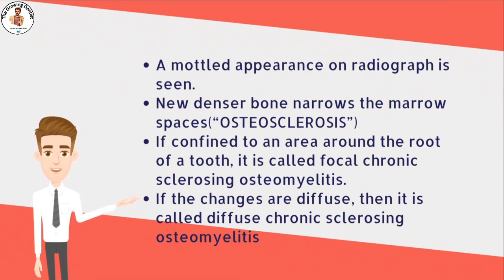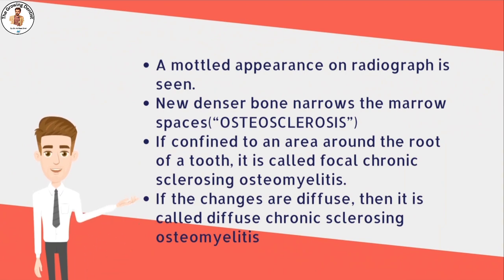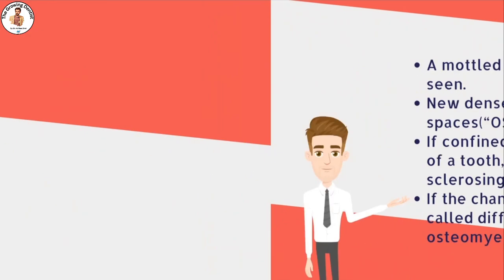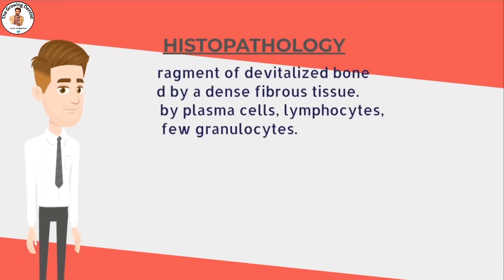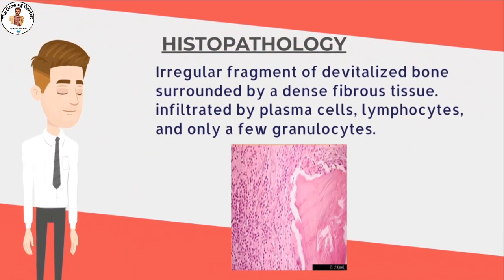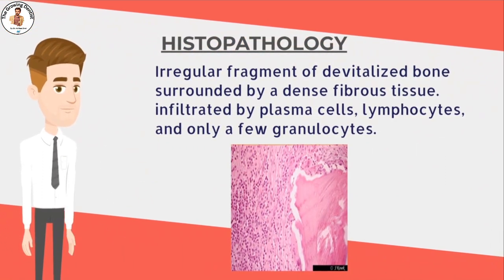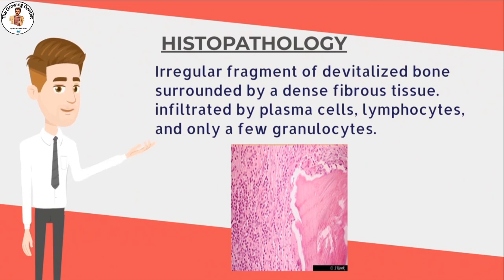If the changes are confined to an area around the root of a tooth, it is called focal chronic sclerosing osteomyelitis. If these changes are diffuse, it is called diffuse chronic sclerosing osteomyelitis. Histopathology shows a regular fragment of devitalized bone surrounded by dense fibrous tissue, heavily infiltrated by plasma cells, lymphocytes, and only a few granulocytes.